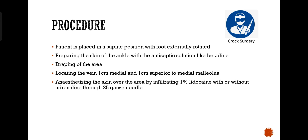Procedure of Venasection: patient is placed in supine position with foot externally rotated. Prepare the skin of the ankle with antiseptic solution like betadine, drape the area, and locate the vein 1 cm medial and 1 cm superior to the medial malleolus. Anesthetize the skin over the area by infiltrating 1% lidocaine with or without adrenaline through a 25-gauge needle.